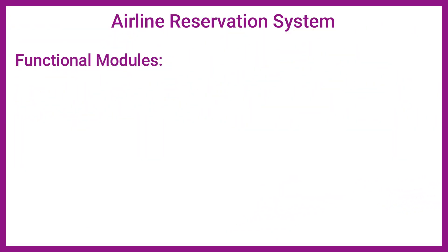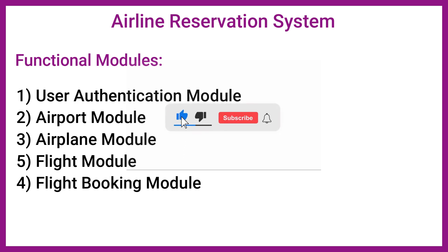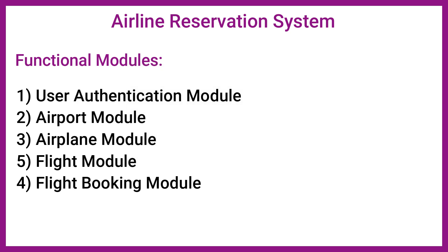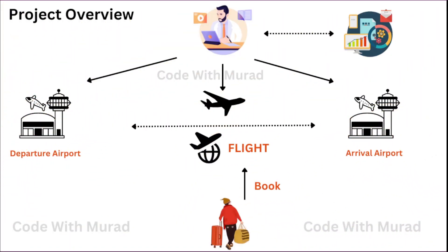The project contains two user modules: the administrator module and the passenger module. The functional modules are: user authentication, airport module, airplane module, flight module, and the flight booking module. We will see all the complete functionalities from these modules in the later part of the video.